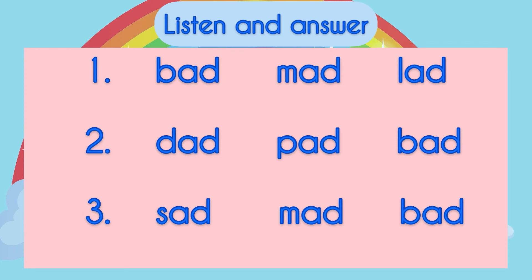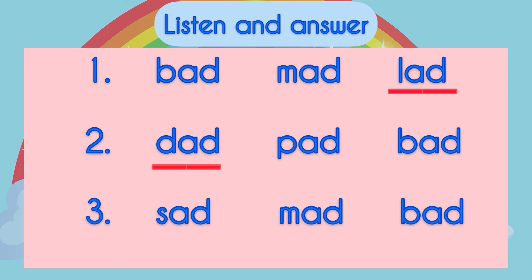For the next activity, listen and answer. Number one — what is the correct spelling for Lad? Yes, it's L-A-D, lad. Number two — what is the correct spelling for Dad? Yes, it's D-A-D, dad. Number three — what is the correct spelling for Sad? Yes, S-A-D, sad. Lad, Dad, Sad — good job!